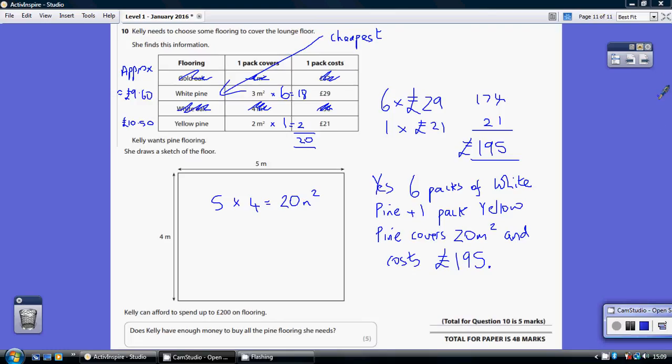Question 10. Now I think this is actually quite confusing. You've really got to read the words carefully. Kelly needs to choose some flooring to cover the lounge floor. She finds some information.